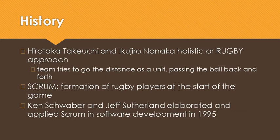Jeff Sutherland originated the first Scrum project in 1993. Sutherland, working with Ken Schwaber, developed Scrum as a formal process in 1995. In 2001, Sutherland and Schwaber, along with several pioneers of agile thinking, convened at a ski resort in Utah to assess commonalities in agile methods. The Agile Manifesto was created out of this group's consensus.